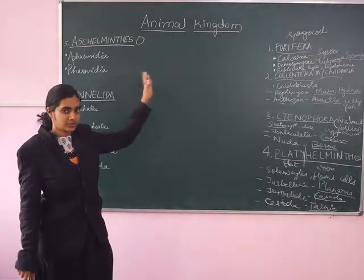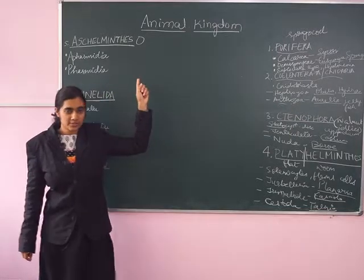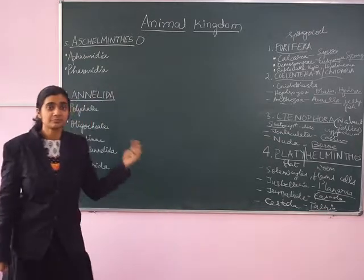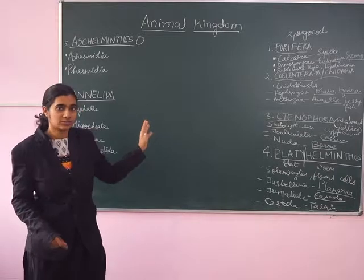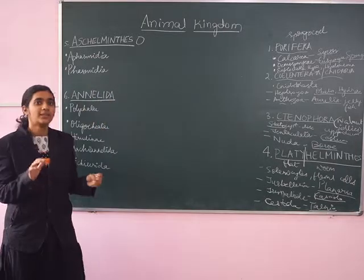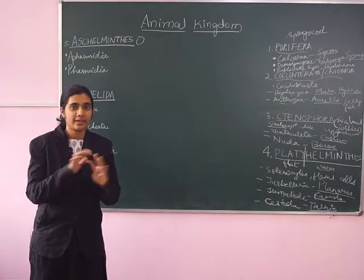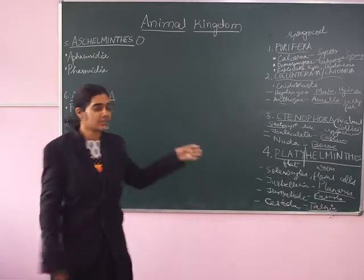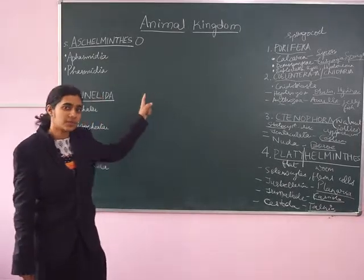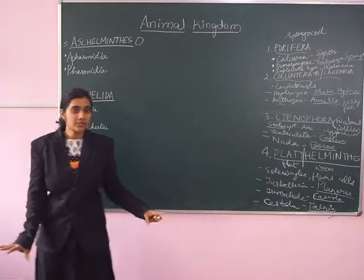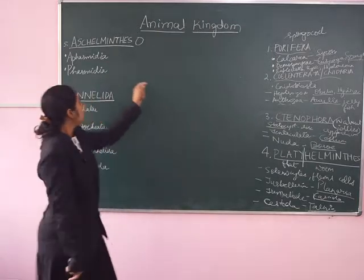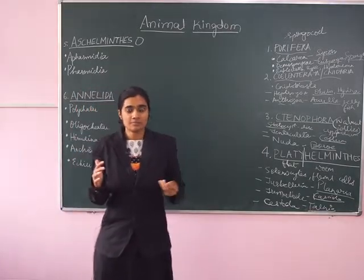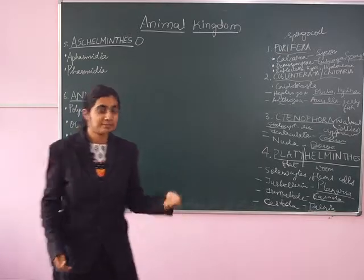The animals of Aschelminthes are round worms. They are actually bigger than the members of Platyhelminthes. These are almost exclusively parasitic in nature and they bring about agricultural and veterinary havoc. If water sources and agricultural fields are contaminated with these worms, which are passed through excreta, the Aschelminthes members can be very, very dangerous parasites.